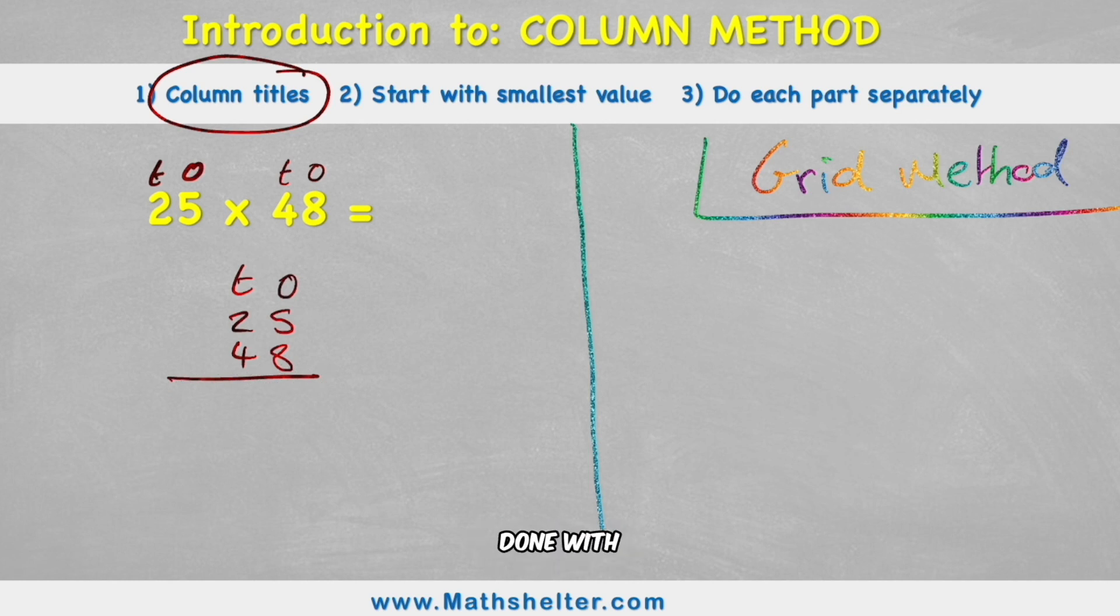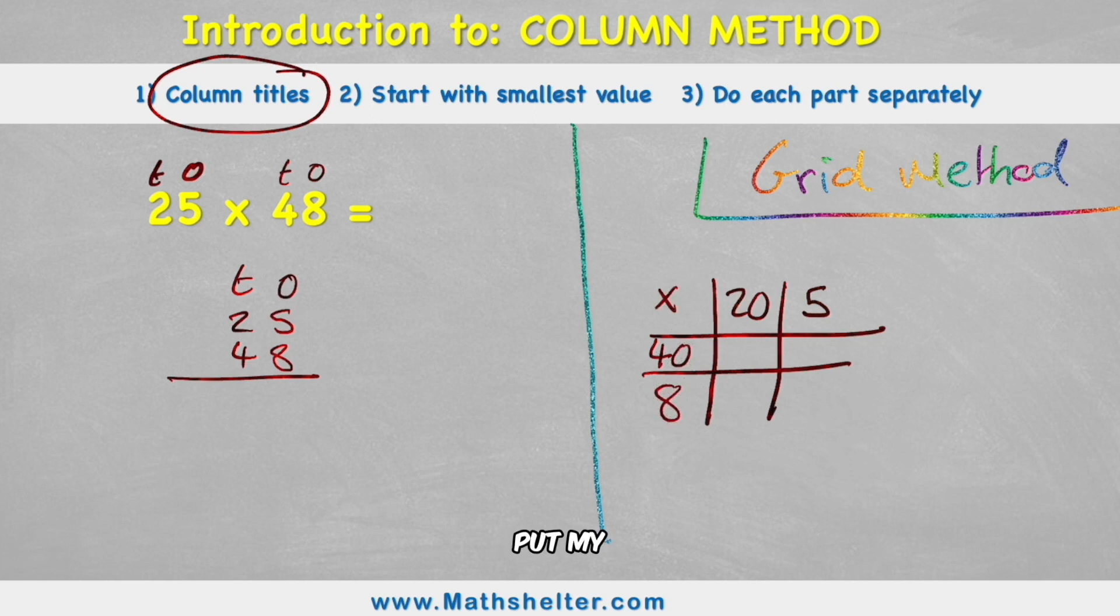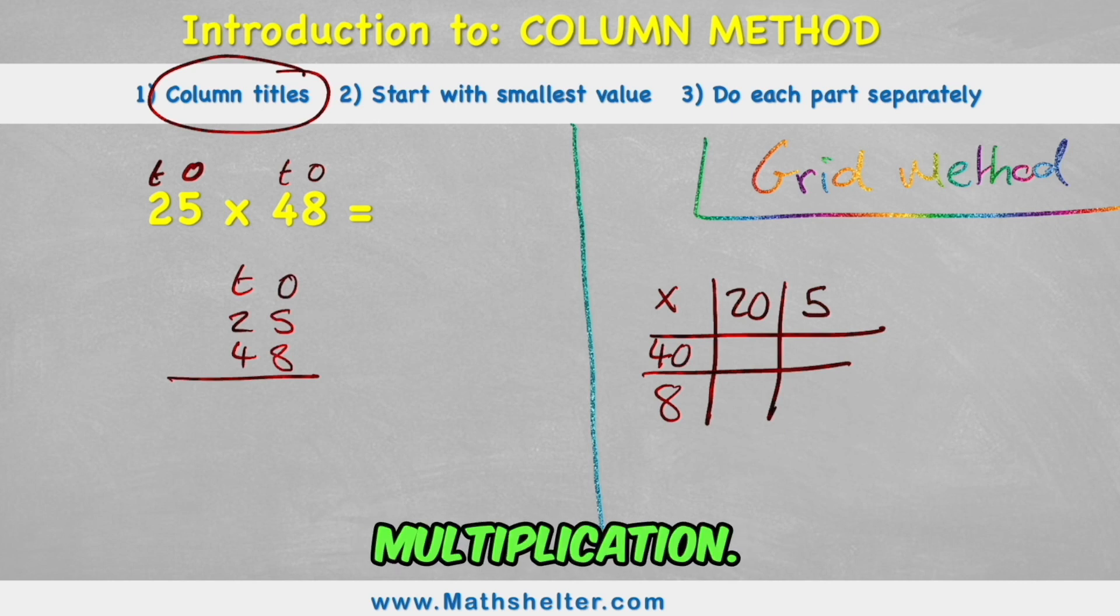But let's have a look what I would have done with grid method. I would have put my boxes just like this, and I would have taken my 25 and split it into a 20 and a 5, and I would have split my 48 into a 40 and an 8. Put my multiplication sign in the corner, and I'm ready to begin. If you've never seen this grid method before, I would highly recommend going and finding that video on this channel to try and help you first, because grid method is a really good way of understanding multiplication.